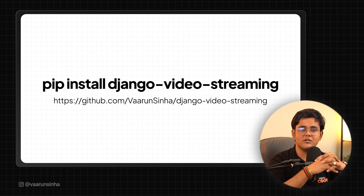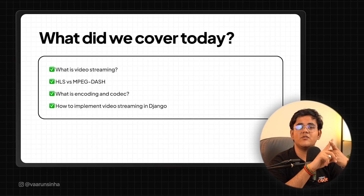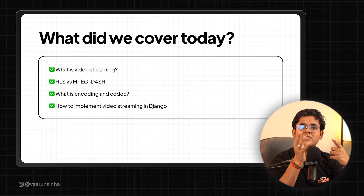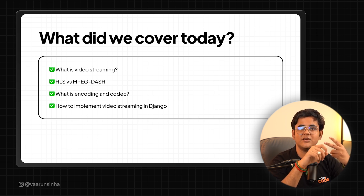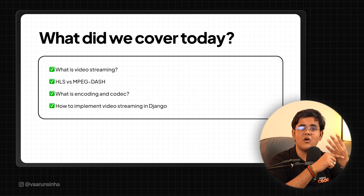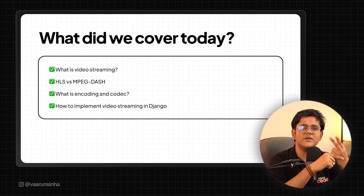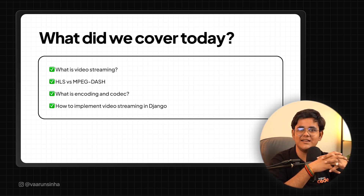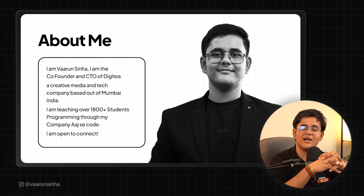So, this was all of it. Before we started this talk, video streaming might have been a complex topic for you, but now I hope it is simpler. Let me conclude what we have learned. First, we learned what video streaming is — essentially dividing up the video into smaller segments and having an index file. Then we learned about the two major protocols used for video streaming and their major differences, which are flexibility of codecs and granular control on quality of video. Then we also learned what encoding and codecs are. And then we learned how to implement video streaming in our Django application at various levels — in Level 1 we made users do all the work, in Level 2 we helped the users, and in Level 3 we added Celery and Django Channels to create a great experience. That is it from my side. I am Varun Siddha, co-founder and CEO of Digity and also the lead instructor at AppSecode. You can connect with me on LinkedIn, GitHub, or email. Thank you.